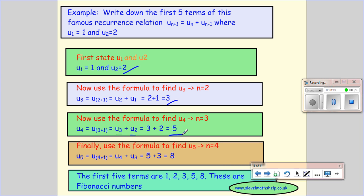And finally we use the formula to find the fifth term. So the fifth term we have n equals 4, so this time we use the fourth and the third term, so this is 5 and 3, and gives us 8. So the first five terms, 1, 2, 3, 5, and 8, and these are Fibonacci's numbers.